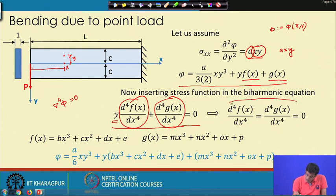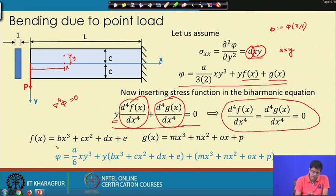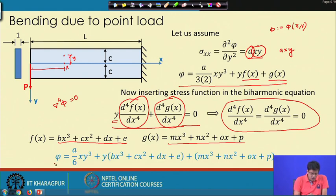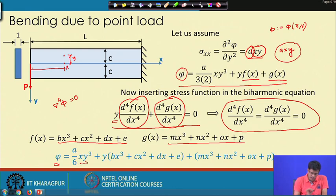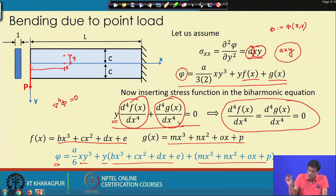Setting each part to zero and integrating, f(x) is a cubic polynomial and g(x) is also a polynomial. The complete φ is: a/6·xy³ plus y times the cubic polynomial f(x) plus g(x), incorporating constants a, b, c, d, m, n, o, p.